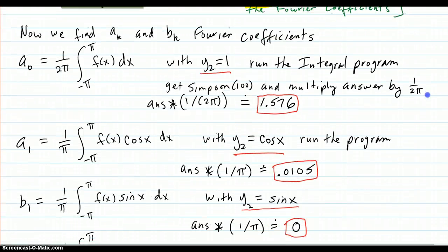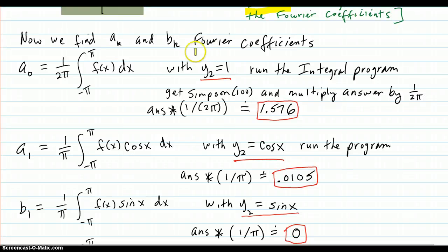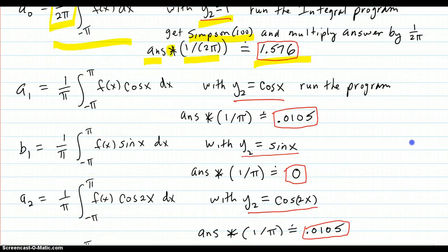So now we find all the coefficients. Here they all are. A0 is this integral here. That's the definition. Make sure y2 is equal to one in the calculator. Run the integral program, Simpson 100. And then you're going to multiply the answer by 1 over 2 pi, because that's out here. So don't forget that. So you run the program, it comes out. Then you put times, and then you see this answer here. And you put 1 over 2 pi. Put the pi in parentheses, and you get this number. And that's a0.